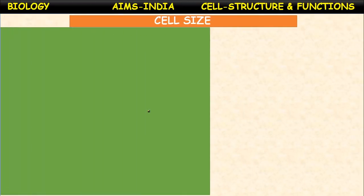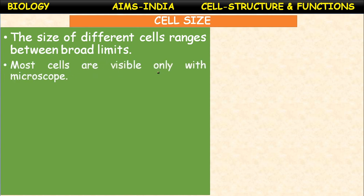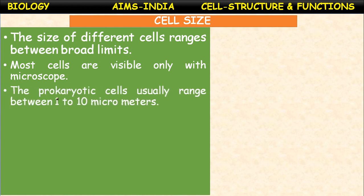Let us briefly study about cell size. The size of different cells ranges between broad limits. Most cells are visible only with a microscope because they are the smallest unit of living organisms. Prokaryotic cells — cells with a primitive nucleus or lacking a nucleus — usually range between 1 to 10 microns. Eukaryotic cells range from 10 to 100 microns, which is very large compared to prokaryotic cells.